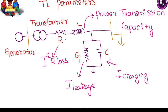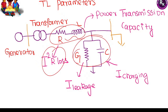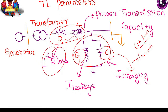Transmission line parameters: the equivalent circuit of a transmission line has four important parameters — series parameters (resistance and inductance) and shunt parameters (conductance and capacitance). Capacitance is responsible for charging current, which causes the Ferranti effect — where, even at no load, the receiving end voltage is higher than the sending end voltage. This Ferranti effect is clearly observed during no load and light load conditions. Series resistance causes I²R losses, decreasing efficiency.